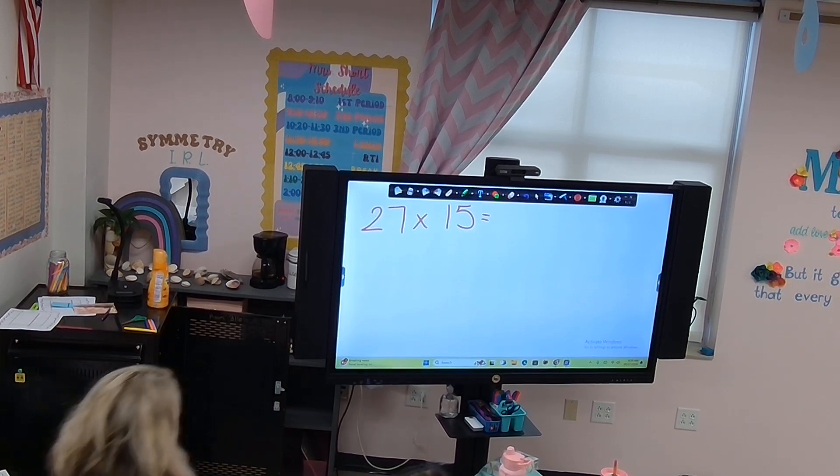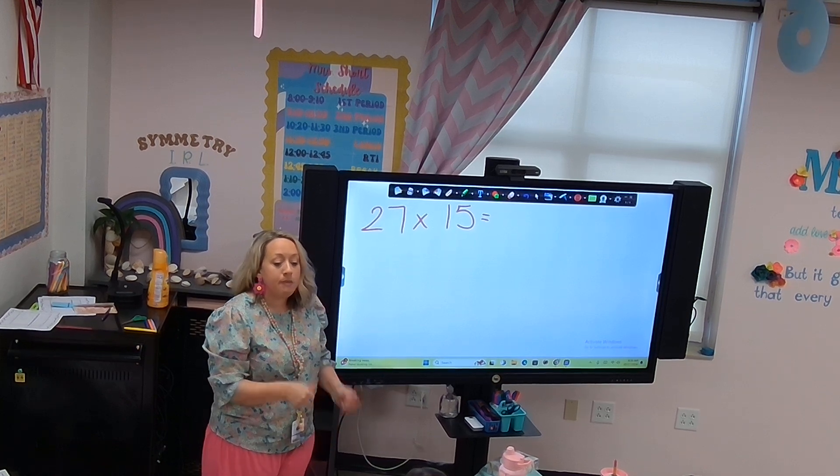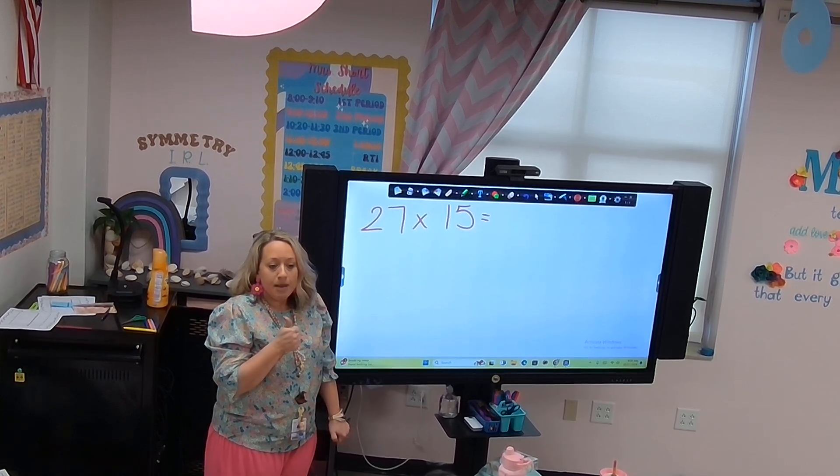Okay, 27 times 15. Make sure you have that written on your scrap paper. Look at your neighbor's paper and give them a thumbs up if they follow directions. Alright, step one, draw your box.